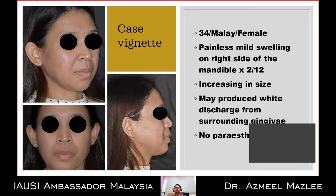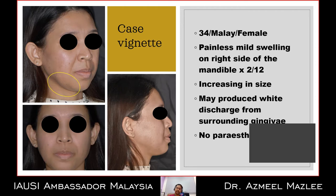On extraoral examination, there was a slight bony swelling on the right side of the lower cheek with slight hardening. Intraorally, there was a slight bony swelling from region 43 to 46. Teeth 45 and 46 were not tender to percussion, but tooth 45 was negative to EPT tests.